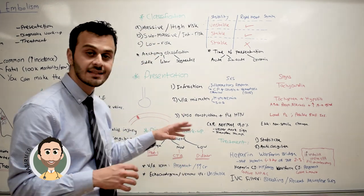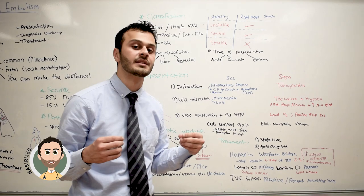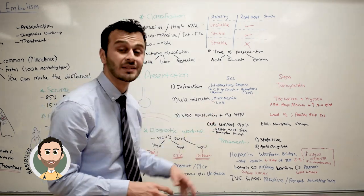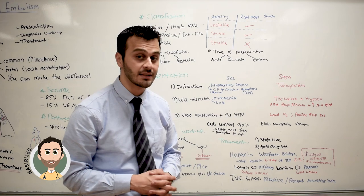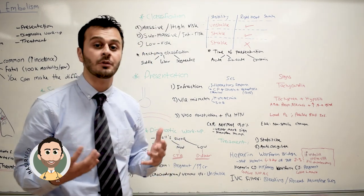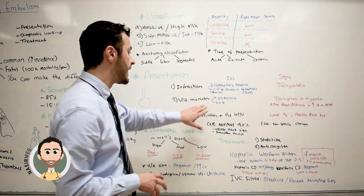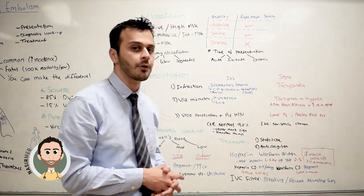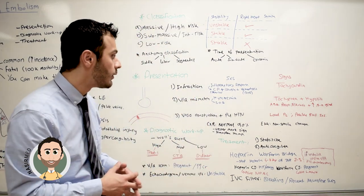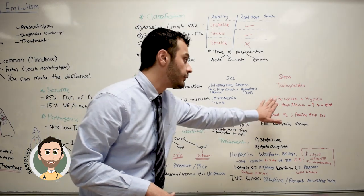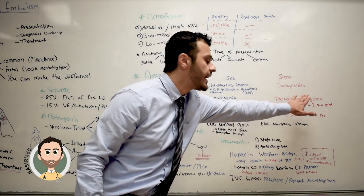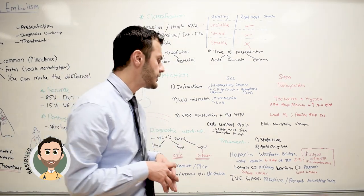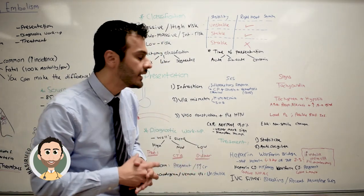Eventually, the distal tissues will receive less oxygen, and that's why the patient will present with hypoxemia and shortness of breath. As a response, the body will try to hyperventilate in order to compensate for the low oxygen, causing the patient to present with tachycardia and hypoxia.